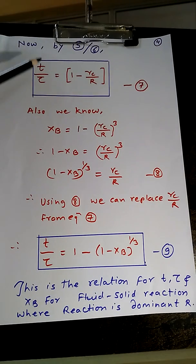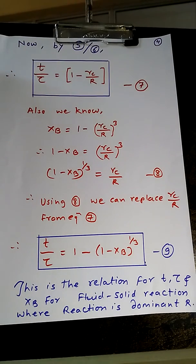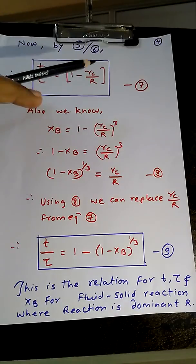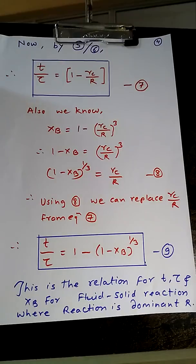Now you can divide equation 5 by 6, so it will be t/τ which is 1 - Rc/R, all common things will cancel out. So this will be our equation number 7.